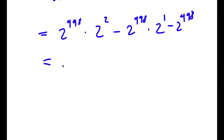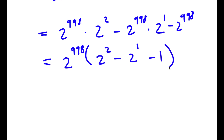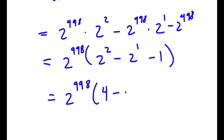Now to simplify this, I'm going to factor out 2 to the power of 998 from all terms since every term contains 2 to the power of 998. So I'm left with 2 to the power of 998 times the quantity 2 squared minus 2 to the power of 1 minus 1. This equals 2 to the power of 998 times 4 minus 2 minus 1.